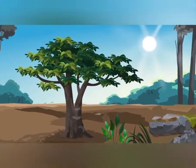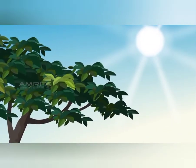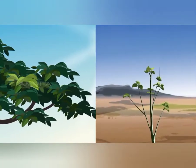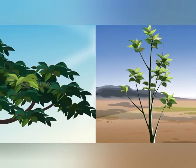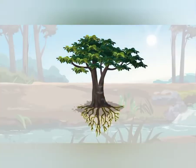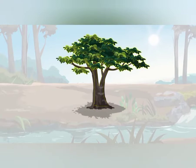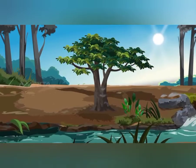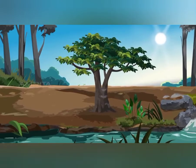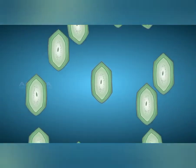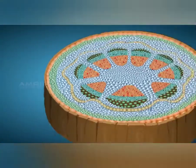Hello children. In our previous class we have discussed about plant tissues. We know that plants are multicellular organisms and they have different parts. They have different organs like the roots, stems, leaves, etc. We also discussed how these organs are formed. Organs are formed from different tissues. A tissue is a group of cells which have similar structure and perform a particular function.